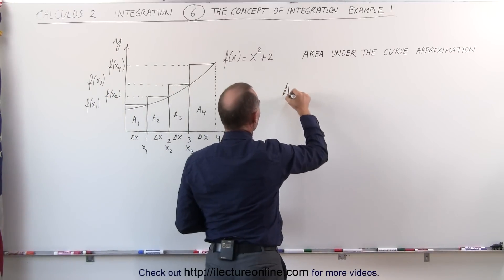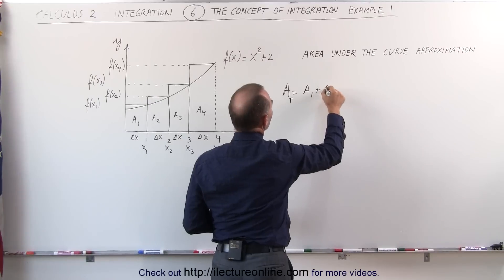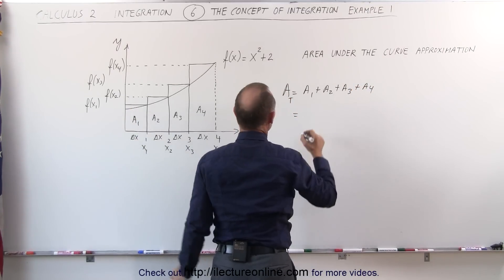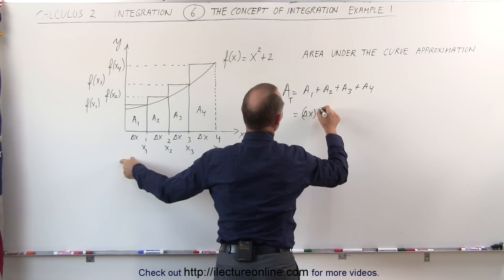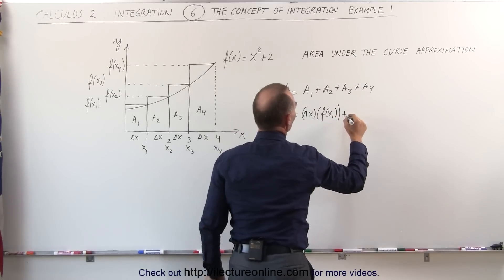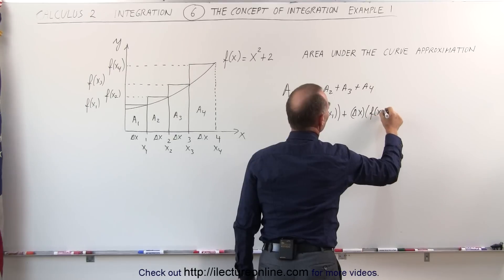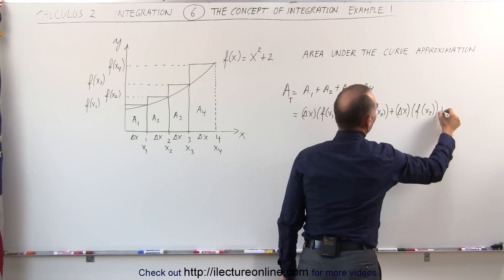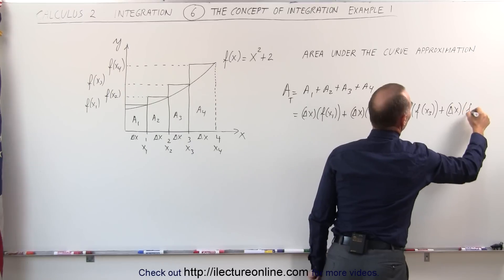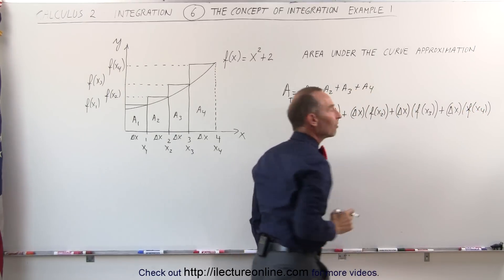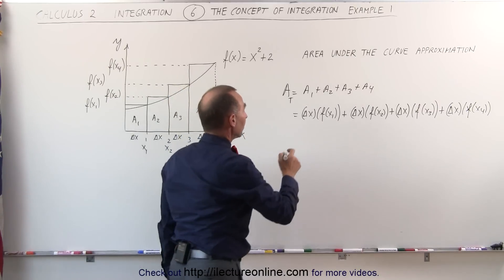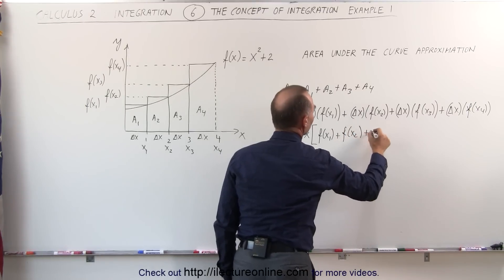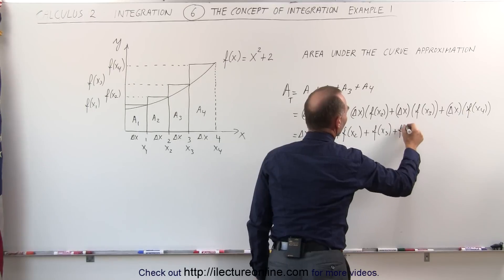The total area will simply be equal to A1 plus A2 plus A3 plus A4. That equals the width delta x times f(x1), plus delta x times f(x2), plus delta x times f(x3), plus delta x times f(x4). Factoring out delta x, this equals delta x times [f(x1) + f(x2) + f(x3) + f(x4)].